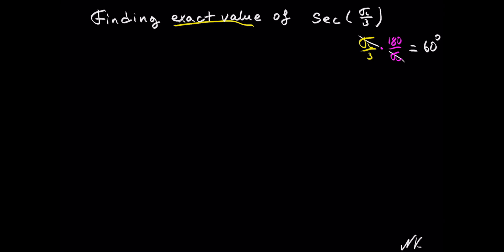So looking for the exact value of secant of pi over 3 is the same as looking for the exact value for secant of 60 degrees. On this step it's up to you.